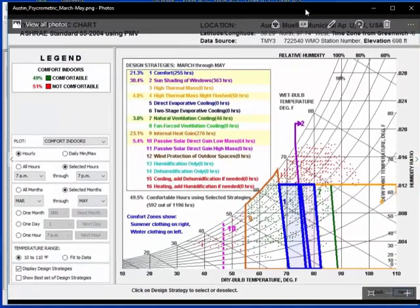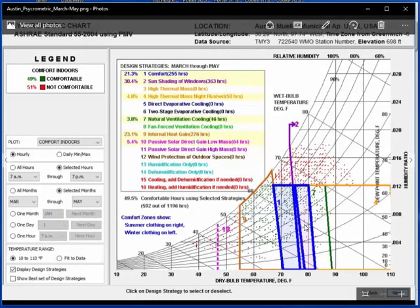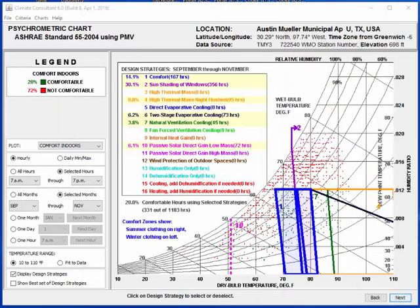Here's March and May. You can see once again high thermal mass with night flushing seems to work in March and May. So the two swing times of the year, that can be effective. In summer it's not very effective at all. Natural ventilation - same thing, once again in the swing months of fall and spring. Internal heat gain, because there's still some heating need, we can still use a little passive solar direct gain as well as internal heat gain.